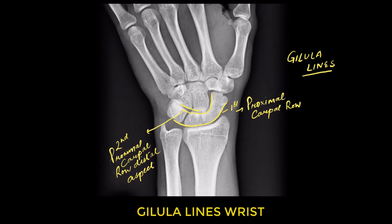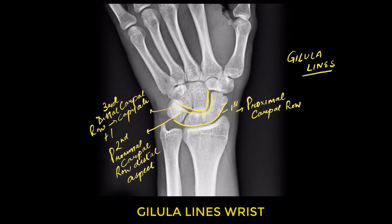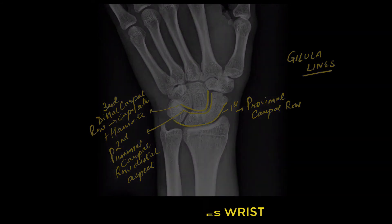The third Gilula arc is basically formed by the capitate and hamate, just next to the second Gilula arc. These are the main arcs to understand. There should be no step-offs in the contours. A disrupted arc basically indicates a ligamentous injury or fracture at the site of the broken arc — that's what you should remember.